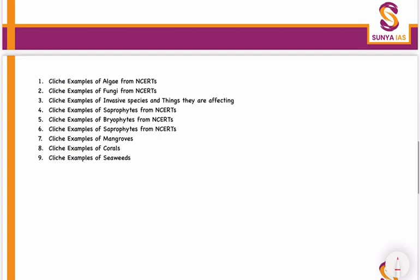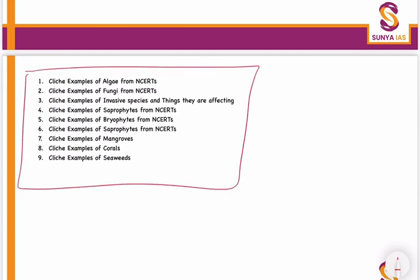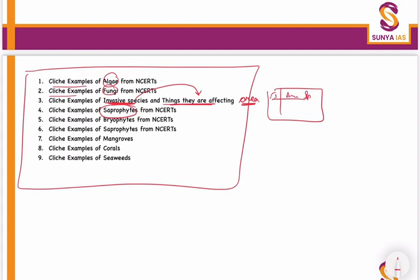Do the cliche examples of algae, fungi, and invasive species. For invasive species, make a chart in tabular format: invasive species, the area it is affecting, and the species it is affecting. The area may be a state, a coastal area, a national park, a wildlife sanctuary, or a biosphere reserve.